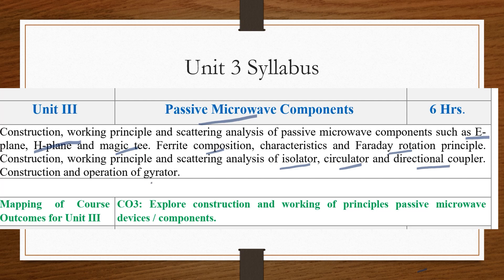And last one is a Gyrator. Remember that the course outcome for Unit 3 is Construction and Working Principle of Passive Microwave Devices and Components. That means students should be aware about working of Passive Microwave Devices. So now before starting to study the Microwave Devices, first we have to understand the importance of Microwave Devices.